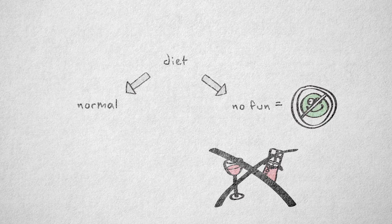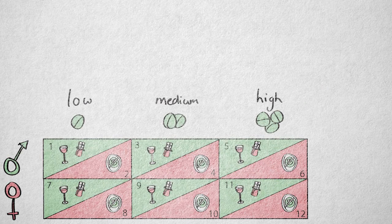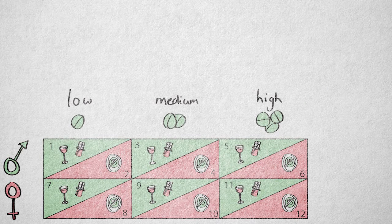This would require that each of the six groups is split in two, with half of the participants being assigned to the normal diet and half to the no fun diet.